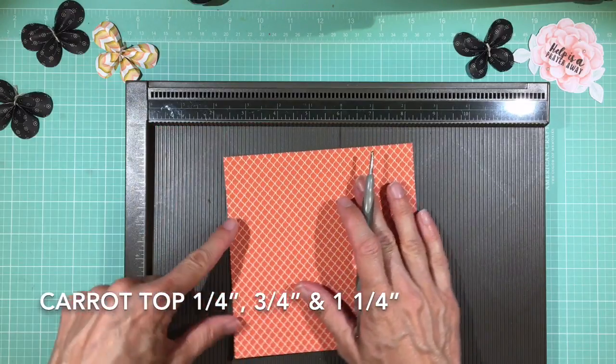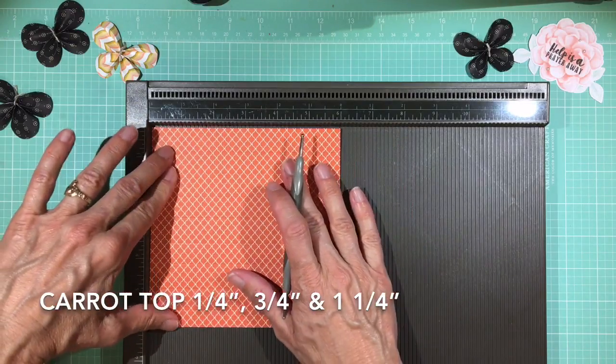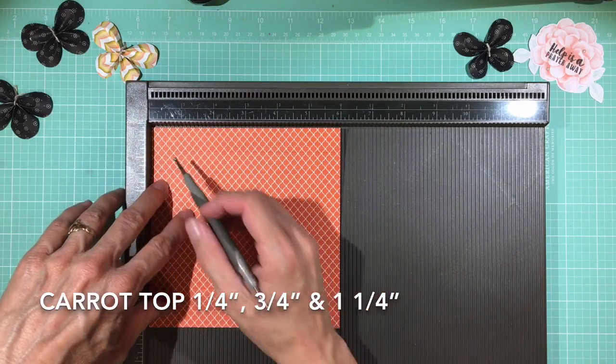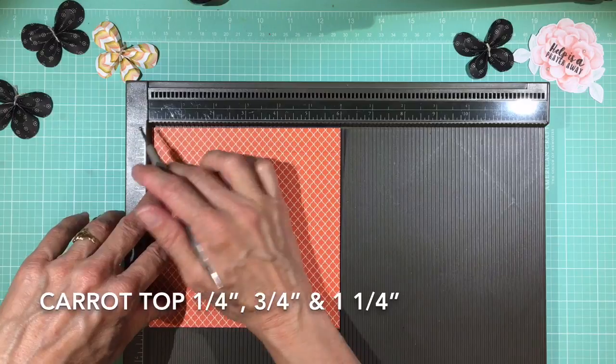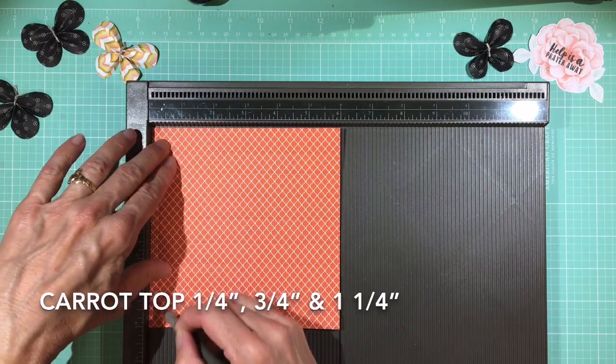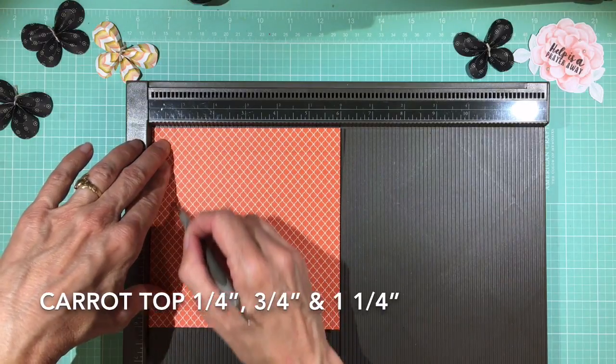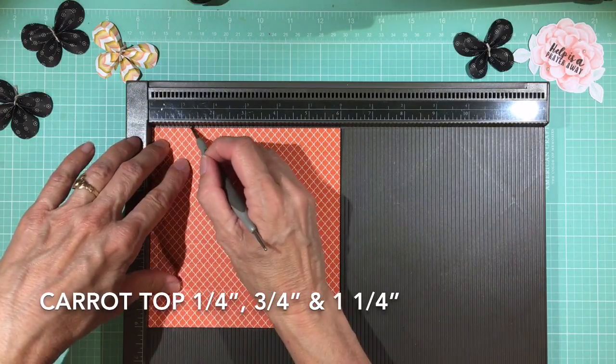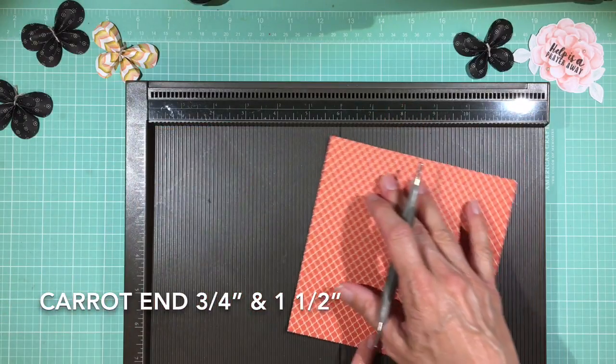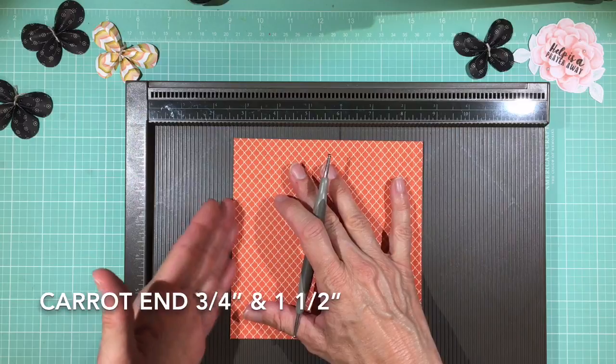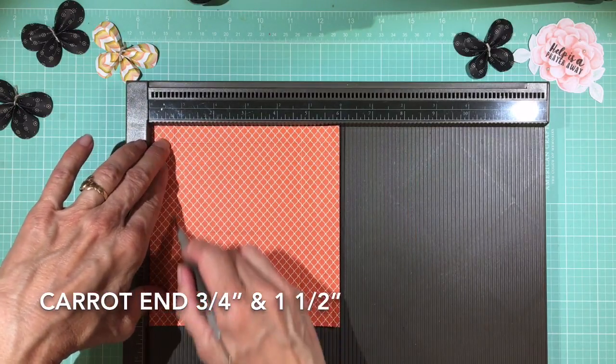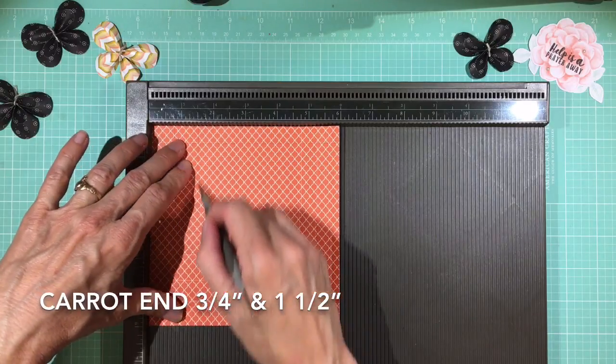Okay, now let's turn one of the other ends towards the left. And this one is going to be the carrot top. So this is going to be up by the greenery. So on the end that you want to be the top of your carrot, we'll score at 1 quarter of an inch, 3 quarters of an inch, and 1 and 1 quarter of an inch. Now we'll turn the other end, this is the bottom, that will be the tip of the carrot, and we're going to score this one at 3 quarters of an inch and 1 and a half inches.